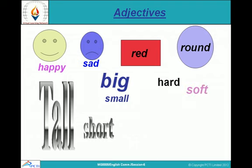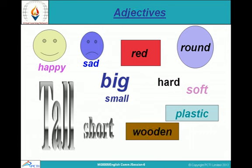Hard, soft, plastic, wooden — these are also adjectives. This table is a wooden table, so wooden is an adjective. This bottle is of plastic, so plastic is an adjective. I am very happy today — happy is an adjective. He is a sad boy — sad is an adjective.